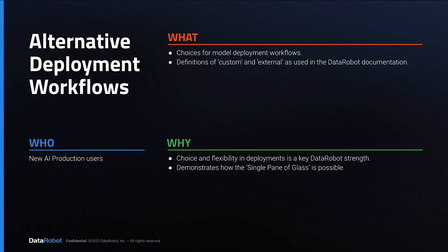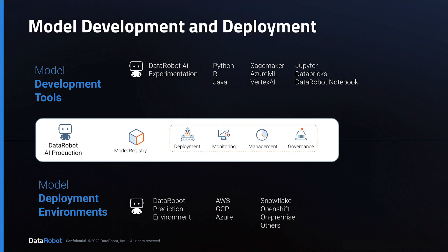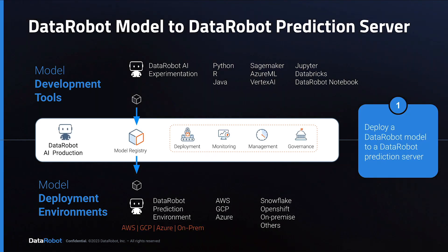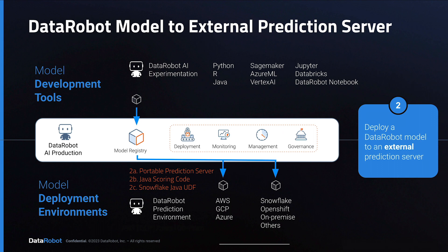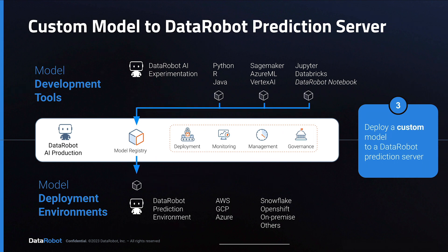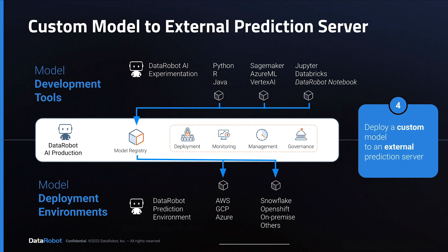In this tutorial, you'll learn about five alternate choices for deployment workflows, and some variations on each of those five. You'll understand how DataRobot uses the terms custom and external in our documentation when referring to models or environments that are not our own. This is important because choice and flexibility in deployments is a key strength of DataRobot's AI production platform. Offering all these alternative workflows is how we make the single pane of glass for AI production and MLOps possible.